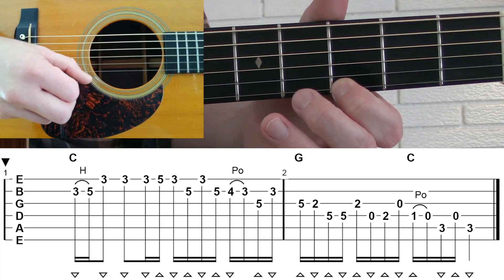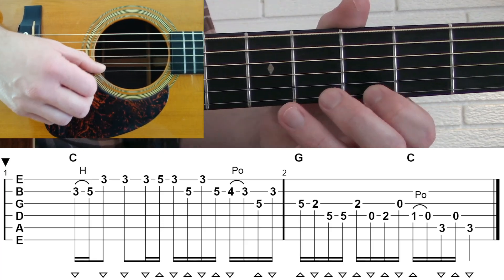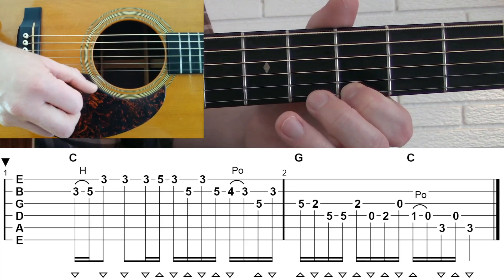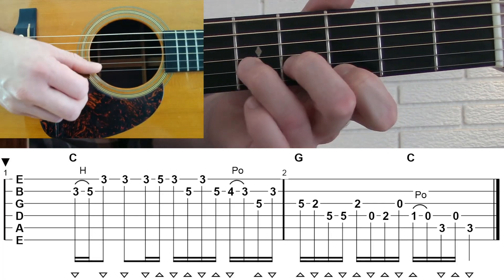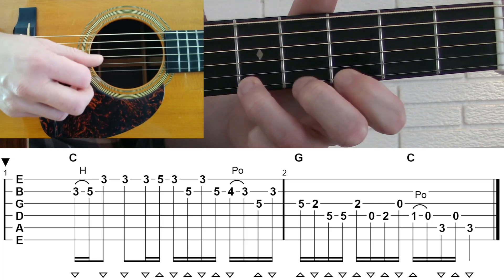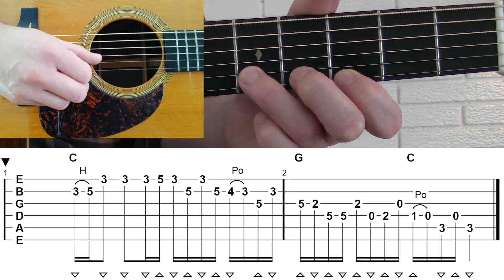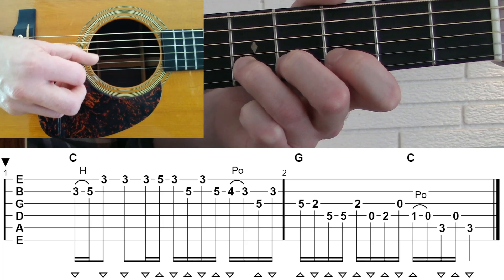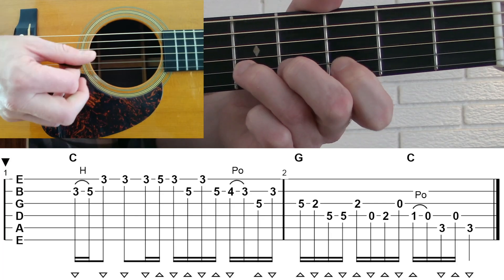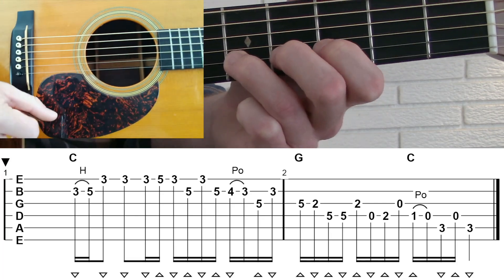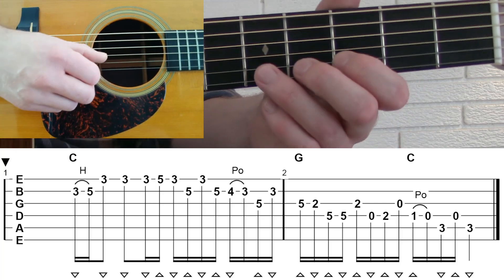Then you're going to play third fret high E to fifth fret high E to third fret high E. That's a down, up, down. So far we've been playing all down strokes. Then we're going to play fifth fret B on an upstroke to third fret high E and then back to fifth fret B. You're kind of riffing off of this third fret position here between these B and the E strings.